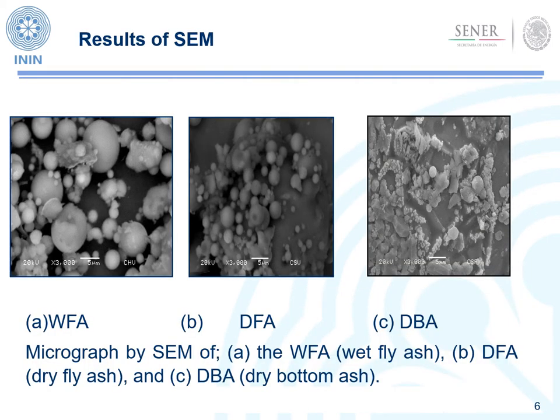The micrographs of the scanning electron microscopy were taken with equipment adjusted at 20 kilovolts, amplification ×3000, and the reference line is 5 micrometers. Through scanning electron microscopy, the particle size is homogeneous on the order of 5 micrometers with a homogeneous and crystalline surface.